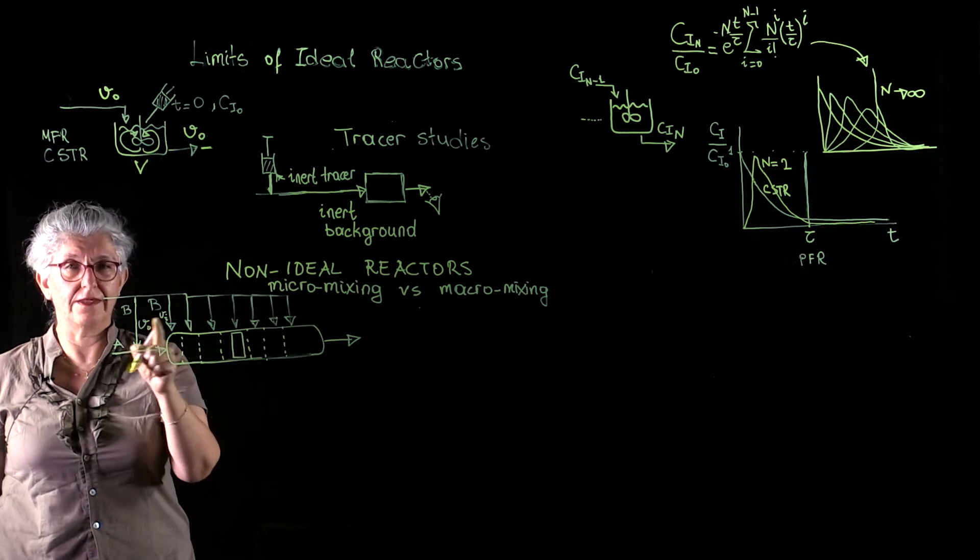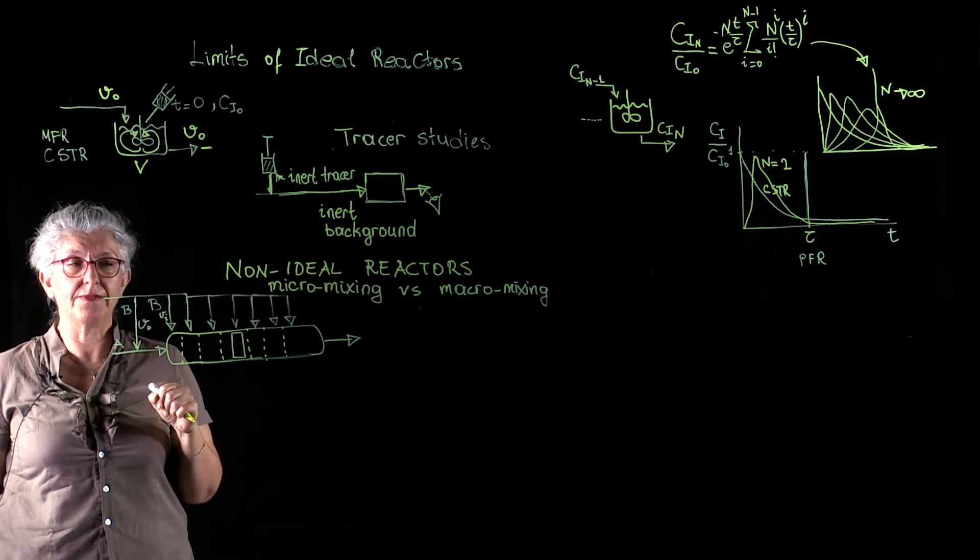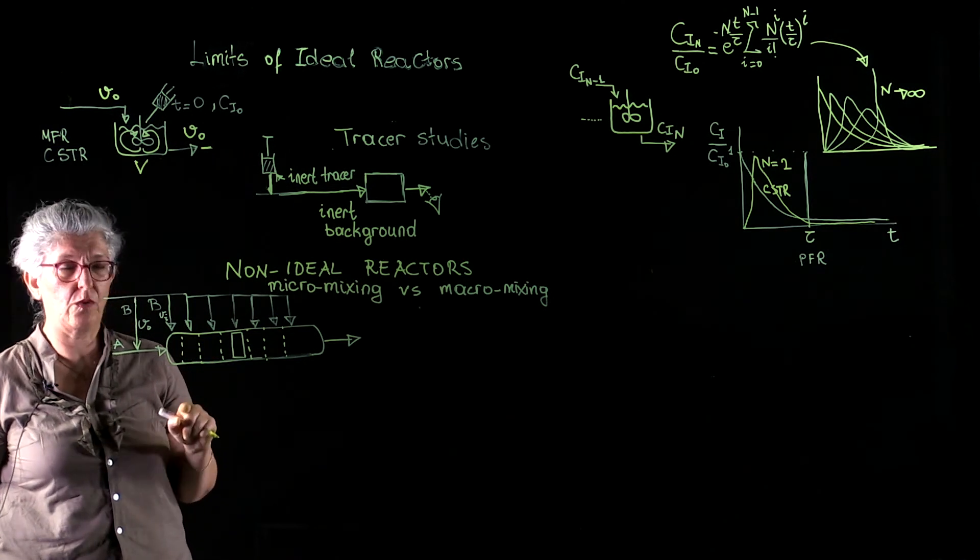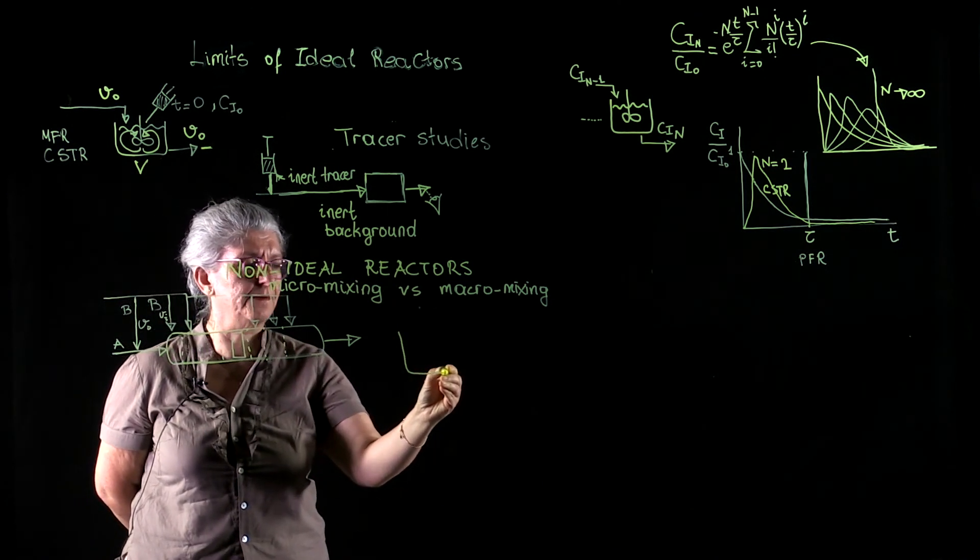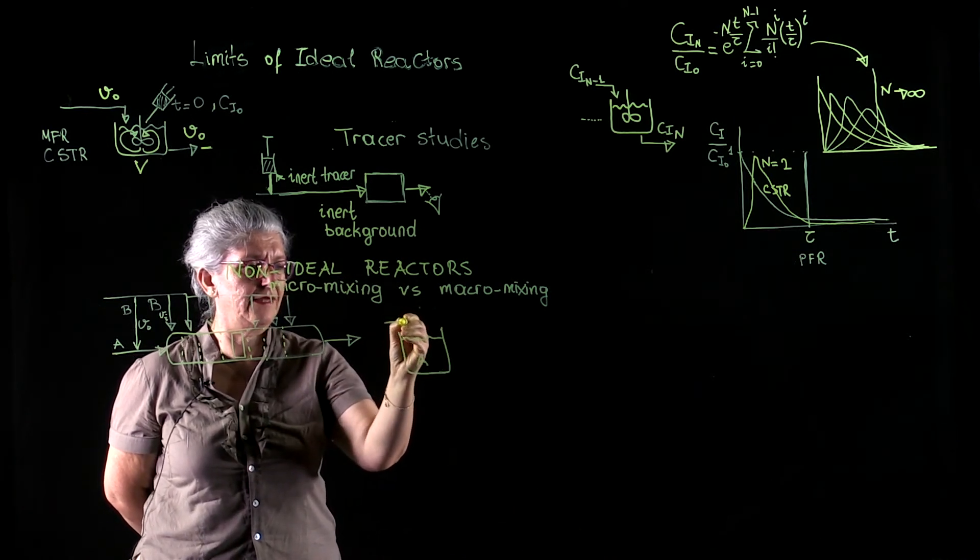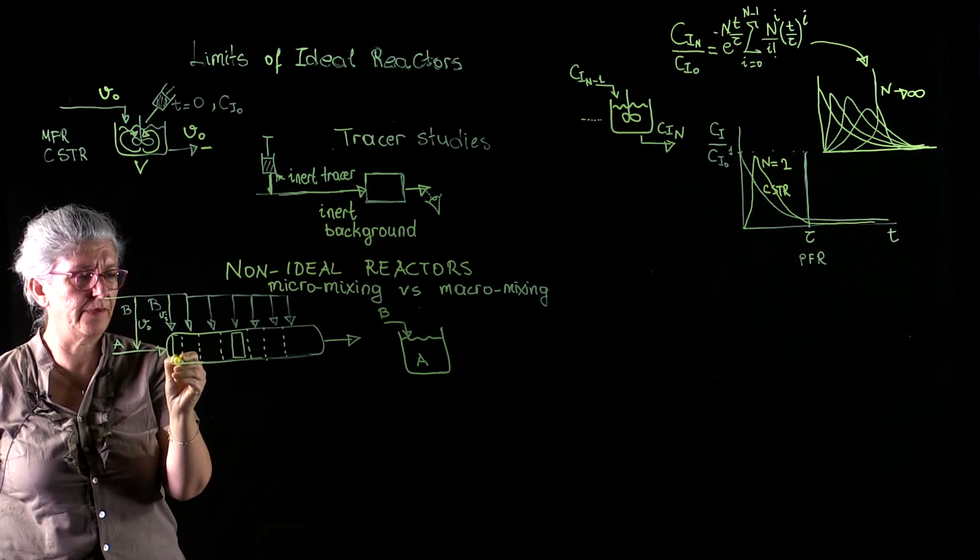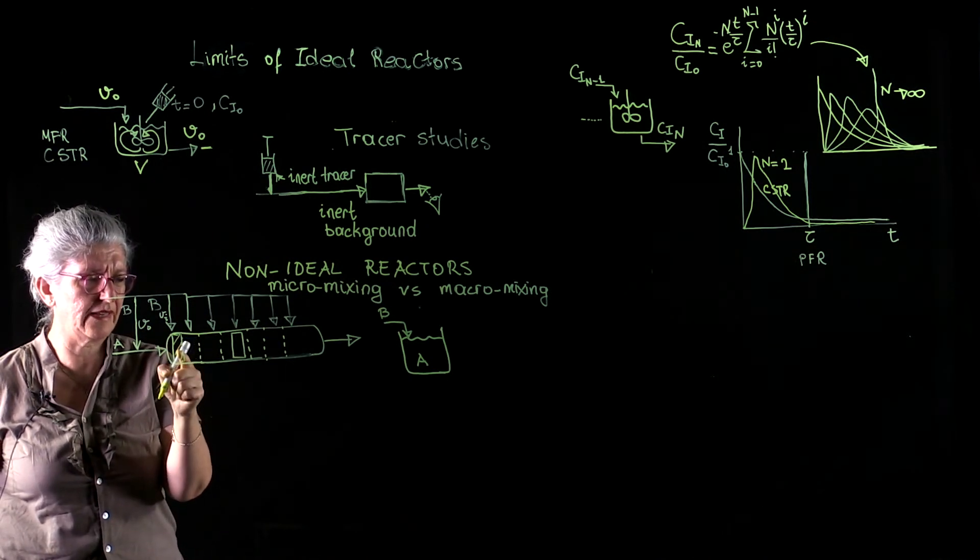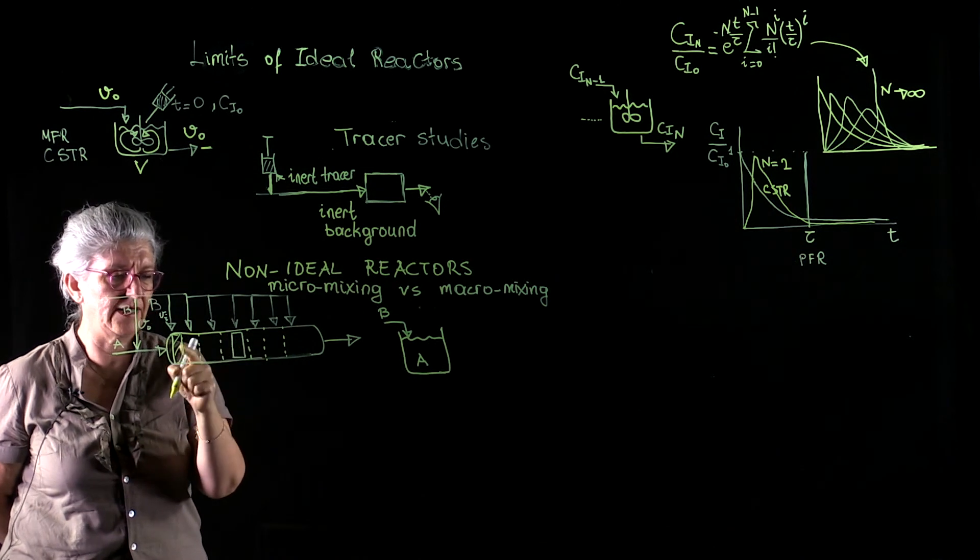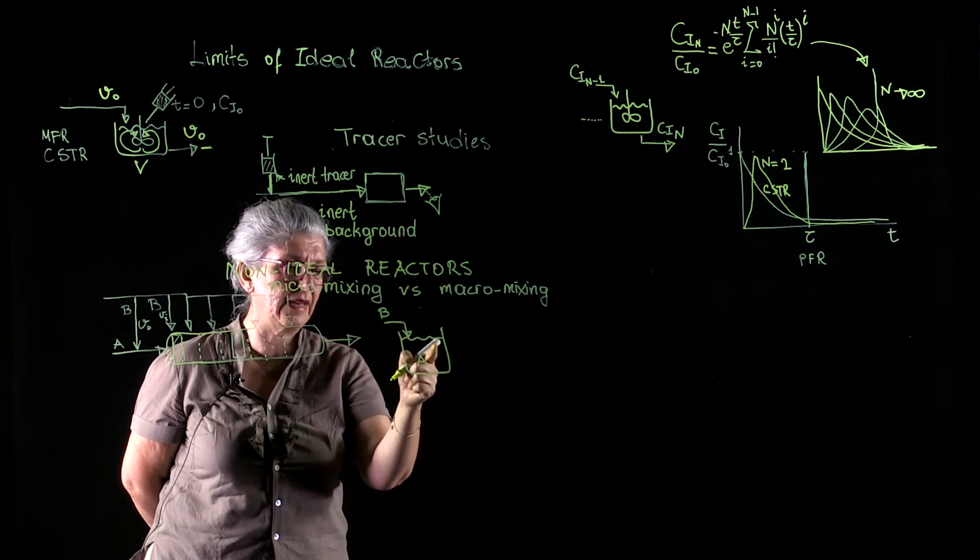So this plug flow reactor operation is very similar in certain cases, which is identical to the operation of a semi-batch reactor, where we have one of the fluids in batch, and the other one is added continuously. We have the A fluid package moving along this reactor, and each time it receives little bit of B. Each time as the conversion, as A, all the reactants are converted, little bit of B added.